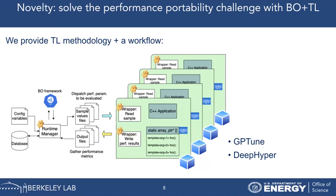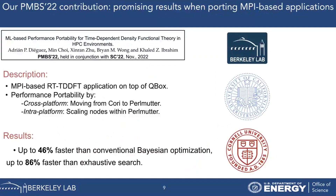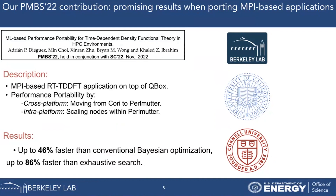You may wonder if Transfer Learning introduces overhead in the search, but so far we haven't seen any significant overhead compared to the savings it provides. Our first contribution was published at the PMBS workshop last year. We targeted an MPI-based Density Functional Theory application, moving it from Cori to Perlmutter, and demonstrated that using our Transfer Learning strategy — using previous information from Cori when training the Perlmutter search — was twice as fast as using a regular Bayesian optimization search on Perlmutter.